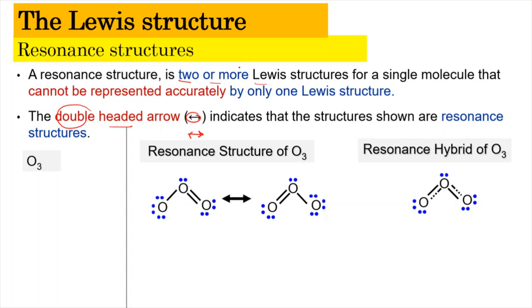In a simple way, resonance structures will have multiple possible answers. If we have one Lewis structure drawn a certain way, it does not necessarily have to be only that way — it can also be drawn differently because they are essentially equal. Both of these answers are correct, because the molecule cannot be represented accurately by only one Lewis structure; it needs two or more.